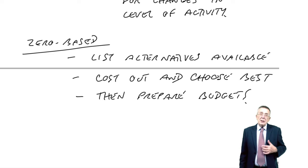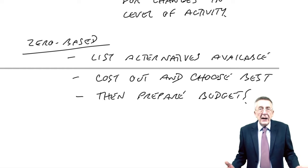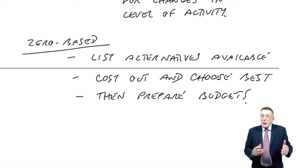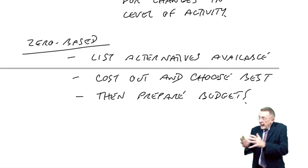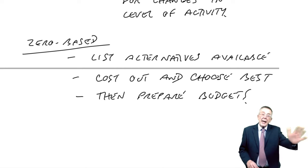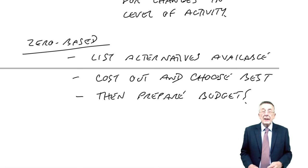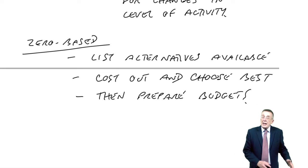But maybe there's a machine that could do the desks. Shouldn't we sit down sometime and say, which is going to be better? Shall we continue making them by hand? Or might it be better to use machines instead? And only when we've decided, okay we'll continue by hand, or no we'll change to machines. Then we should actually budget what the by hand or what the machines are going to cost.